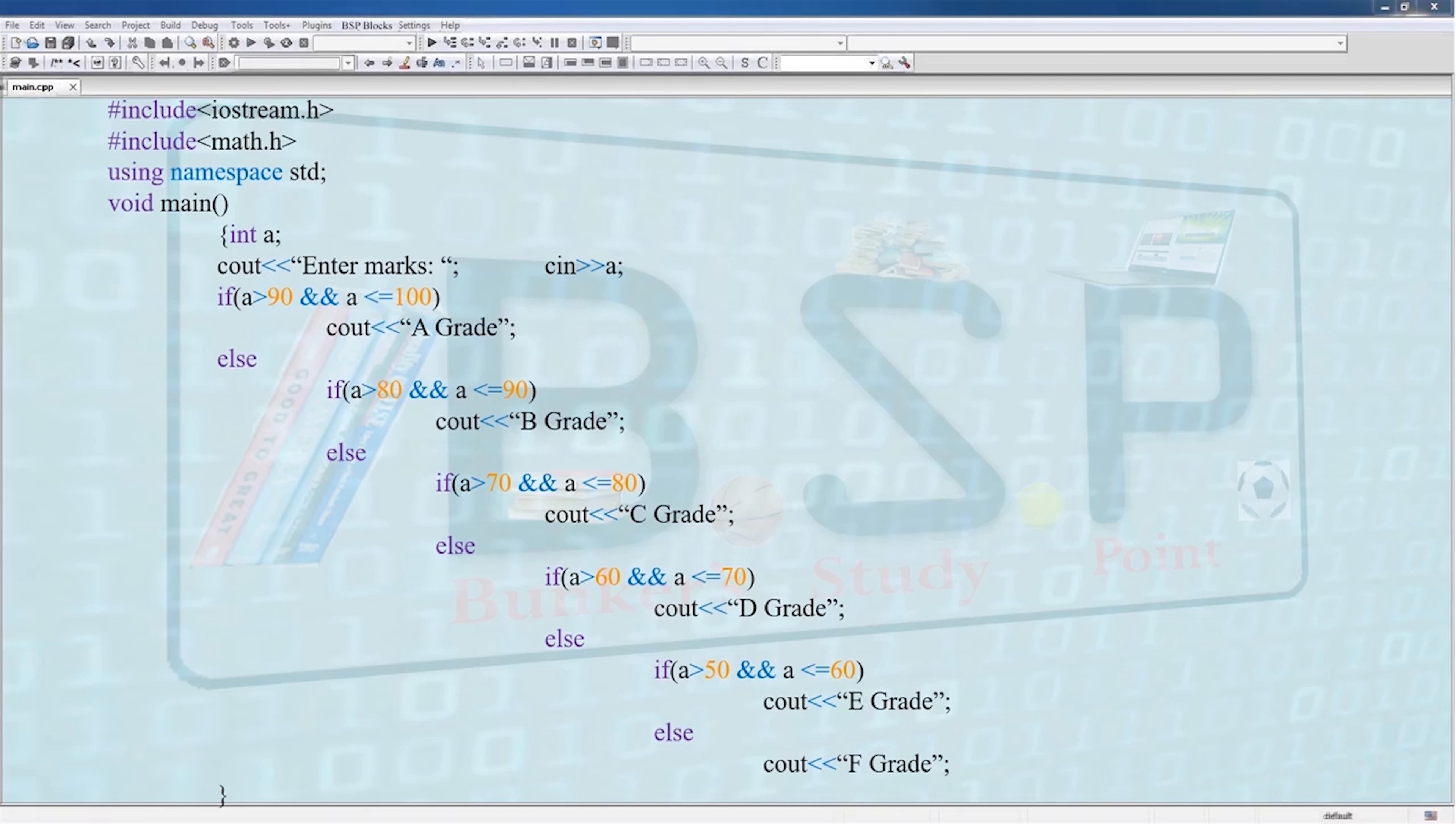First, if a is greater than 90 and a is less than or equal to 100, the grade will be A. The AND connective, as discussed in the previous video, makes sure that both conditions are fulfilled, that is they return the value true.